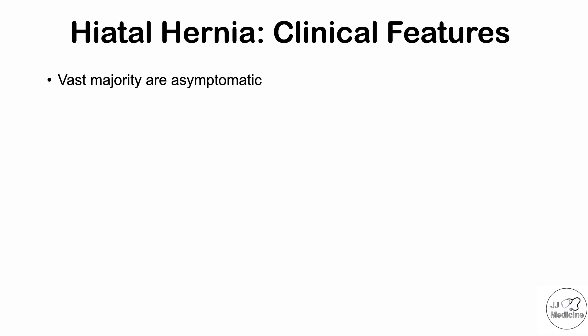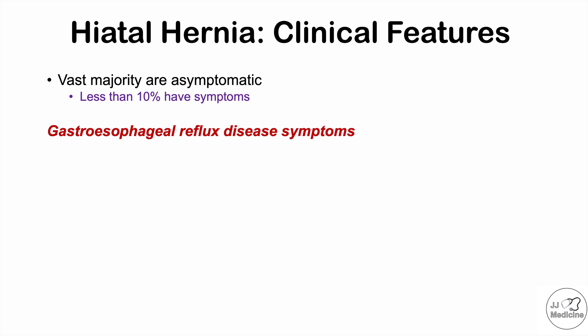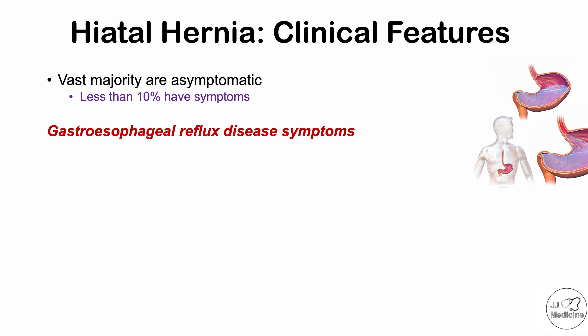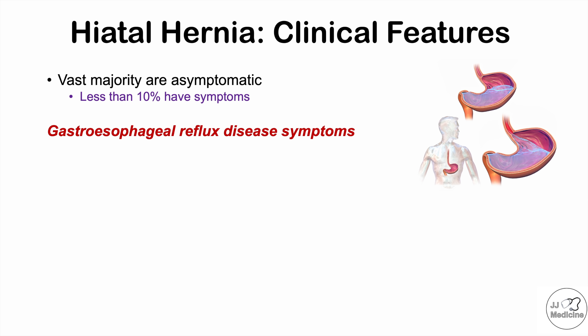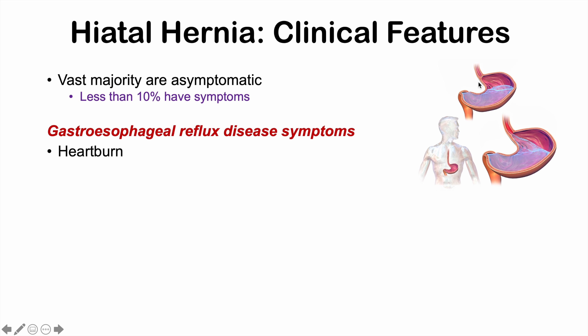It's important to note that the vast majority of patients who have a hiatal hernia are asymptomatic — symptoms only occur in less than 10% of patients. When there are symptoms, they are symptoms of gastroesophageal reflux disease, or GERD. This occurs because the lower esophageal sphincter, or LES, which closes to prevent acidic gastric contents from refluxing into the esophagus, can become weak or relaxed due to the herniation, leading to reflux of acidic gastric contents into the esophagus.